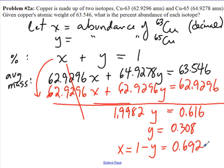Now converting those back to percentages, I'm going to write this at the top beside each of my isotopes. Since y was 0.308, the abundance for copper-65, multiplying that by 100 would be 30.8%. Since the isotope abundance for x was 0.692, multiplying that by 100 gives me 69.2% abundance for copper-63.